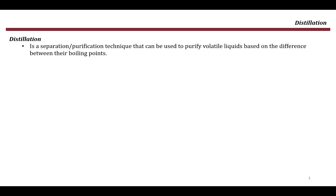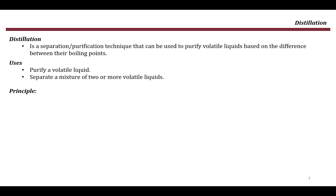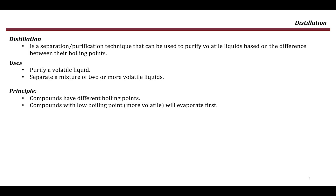The principle of distillation is based on the fact that compounds or liquids have different boiling points, and it makes use of this difference in boiling point to separate them. It is used to purify a volatile liquid by removing impurities or to separate a mixture of two or more liquids. Compounds with low boiling points, which are called more volatile, will evaporate first, and the others will evaporate later.